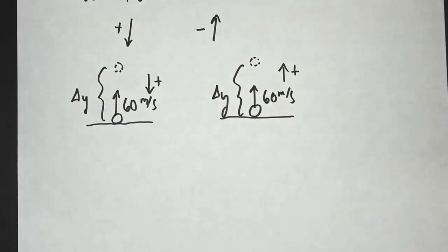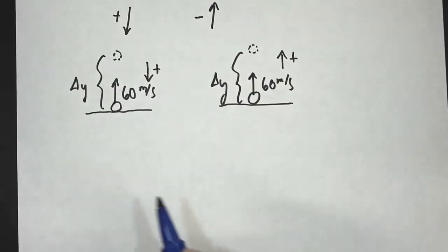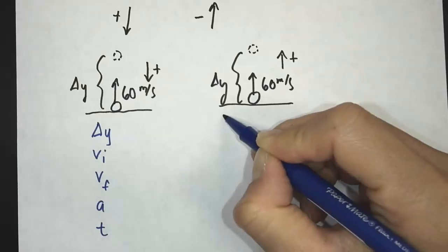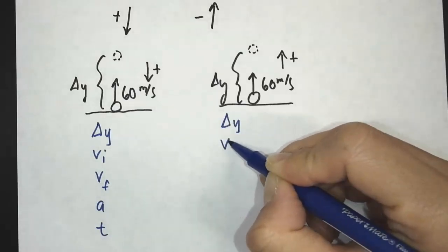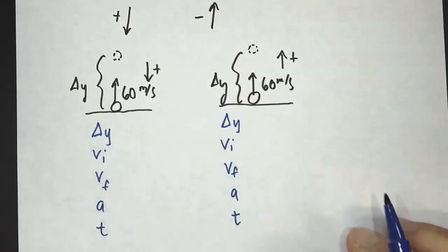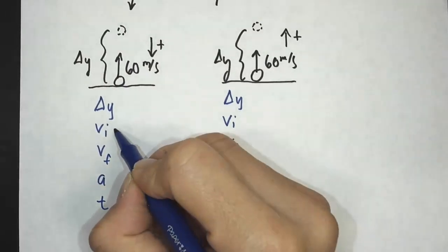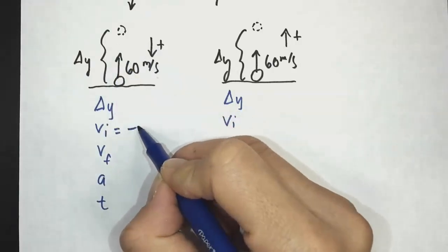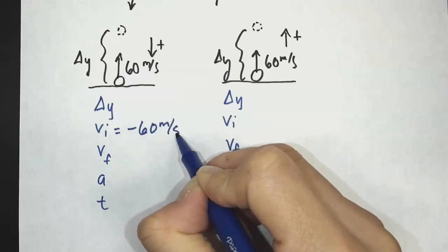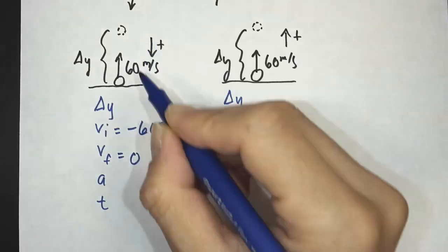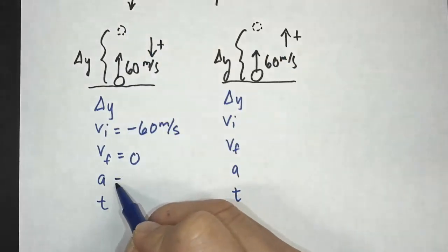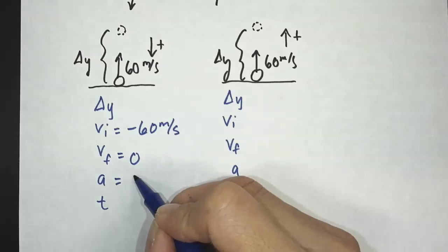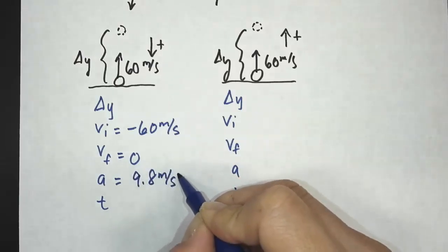The first thing I like to do with these problems is create a variables chart: delta y, vi, vf, a, and t — for both cases. For the down-positive case, the initial velocity is negative 60 meters per second, since the ball is going up and up is the negative direction. At the highest point, the velocity is zero. The acceleration is in the down direction, which I defined as positive, so it will be positive 9.8 meters per second squared.